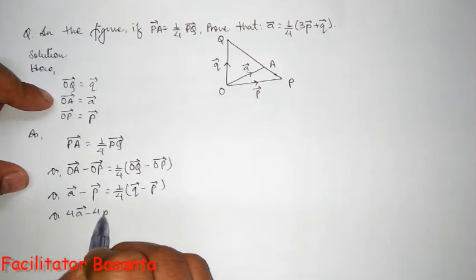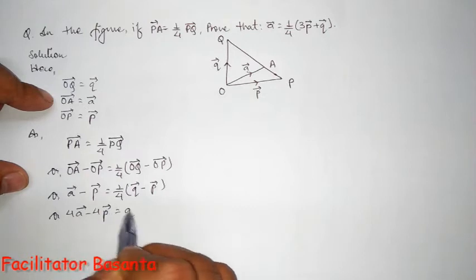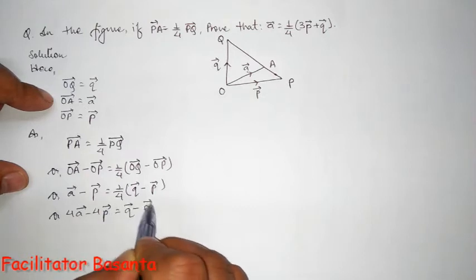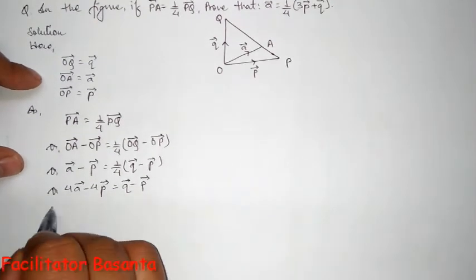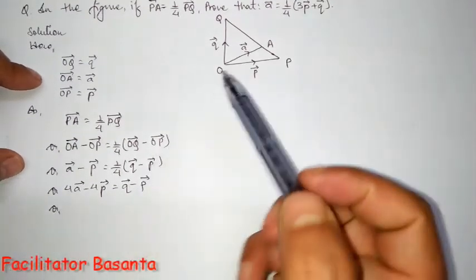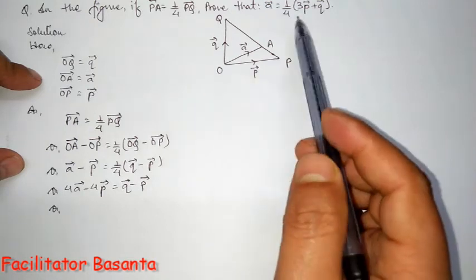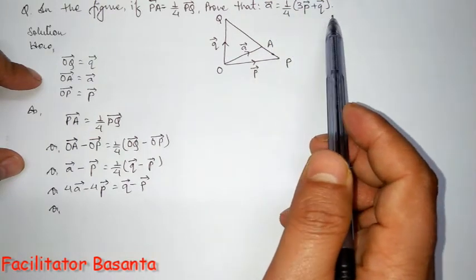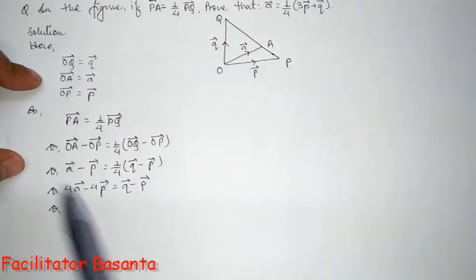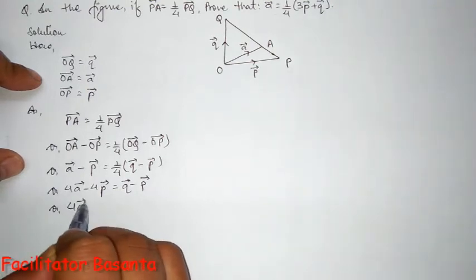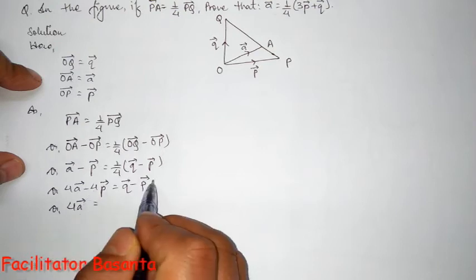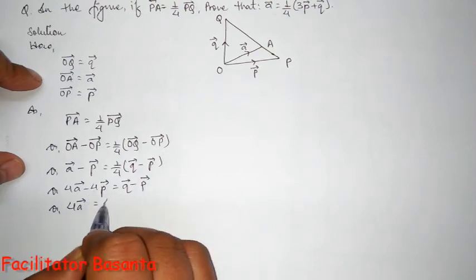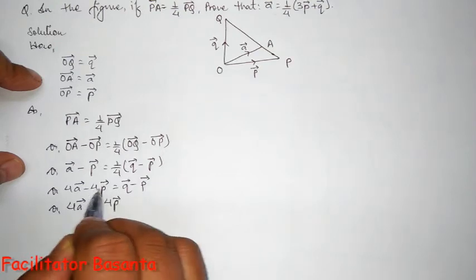a vector minus four p vector equals q vector minus p vector. After this, the same equation we need to prove that a vector equals one-fourth of three p plus q vector. Means we need to find the value of a vector. Means you take four to the next side, what we'll get: this negative four...